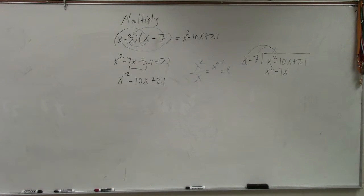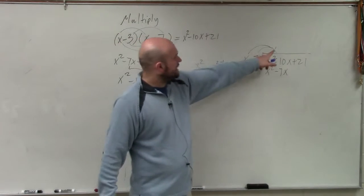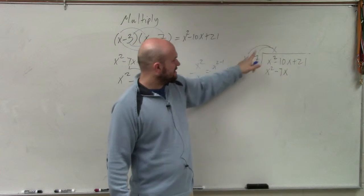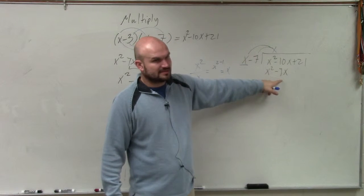So I'll do like these little arcs here. x times x is x squared. x times negative 7x is a negative 7x. Or x times negative 7 is a negative 7x. You multiply x times x, which is x squared. x times negative 7 is negative 7x.